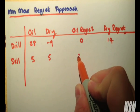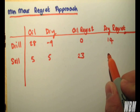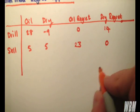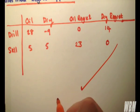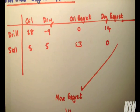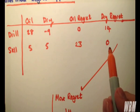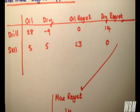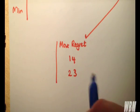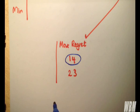So our oil regret, if we sell the land, is 23. And our dry regret is obviously zero. Our max regret across here is 14, and our max regret across here is 23. So the minimum, because it's our min-max regret, is 14. So by the min-max regret approach, we have been told to drill.